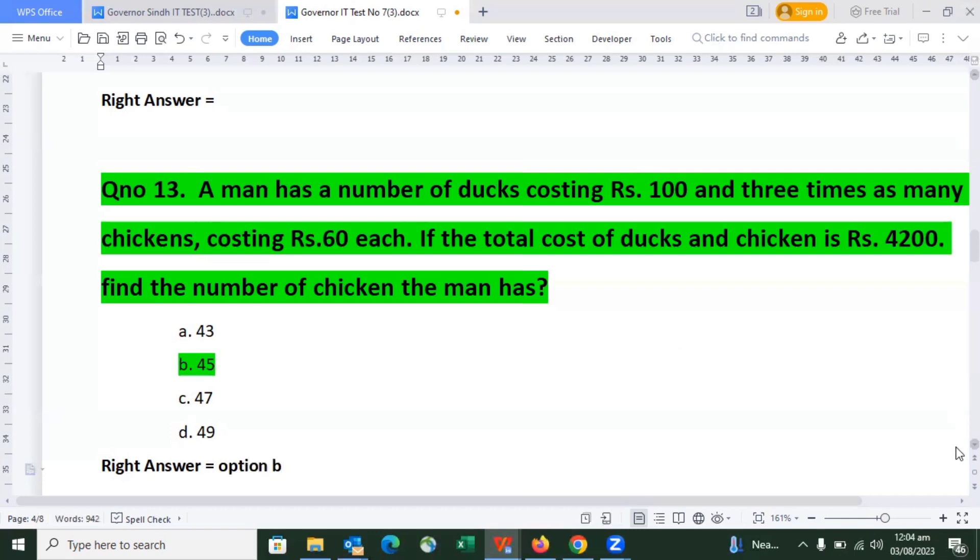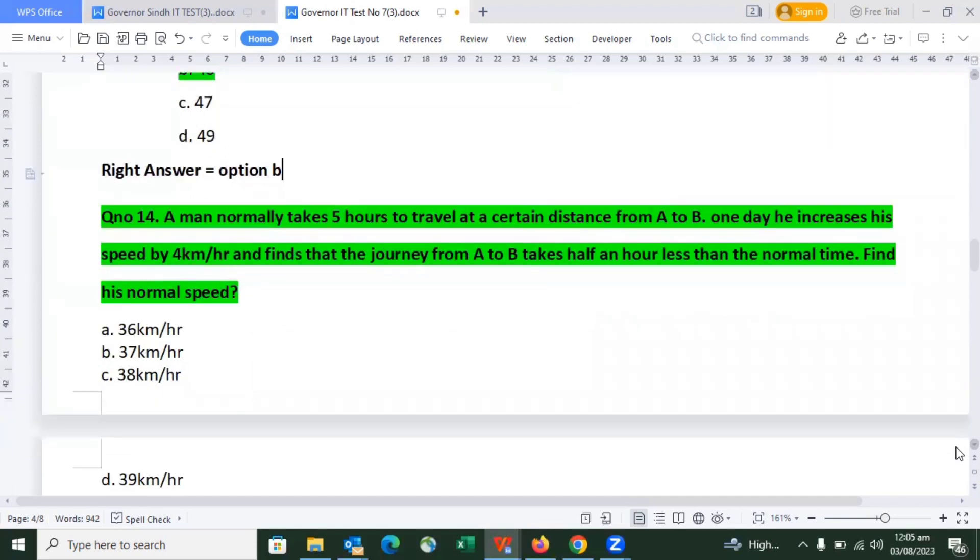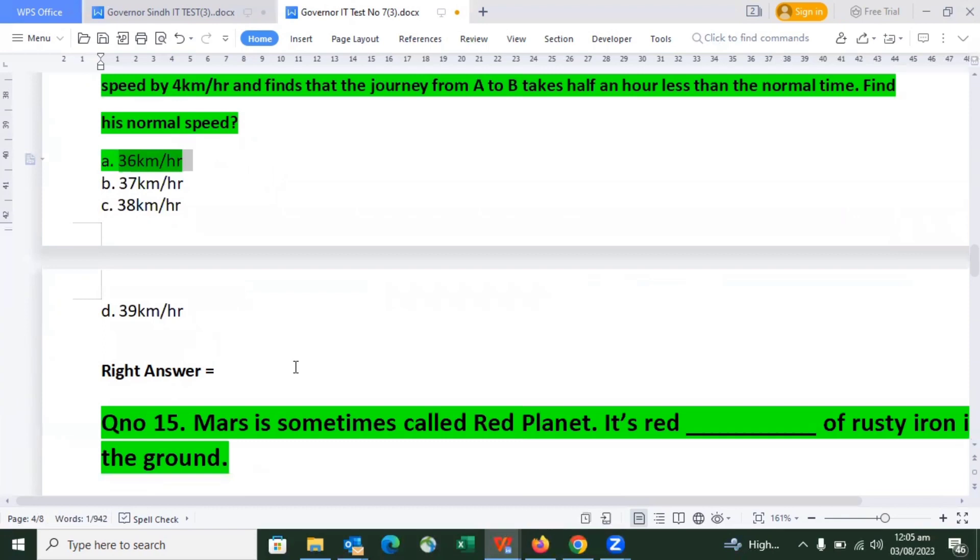Question number 14: A man normally takes five hours to travel a certain distance from A to B. One day he increases his speed by four kilometers per hour and finds that the journey takes half an hour less than normal. Find his normal speed. We already discussed this question, and six kilometers per hour is the right answer, which is option number 3.